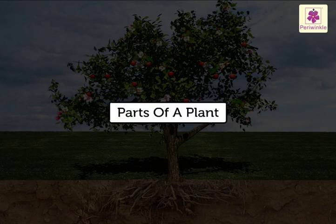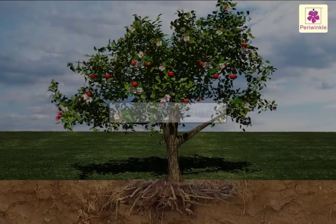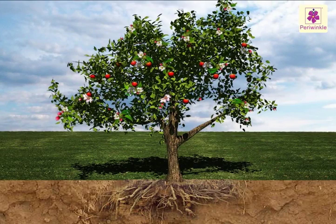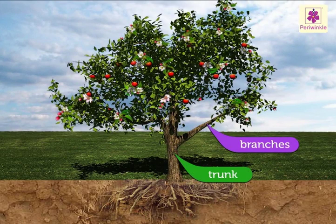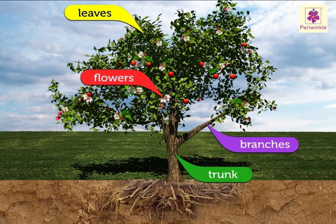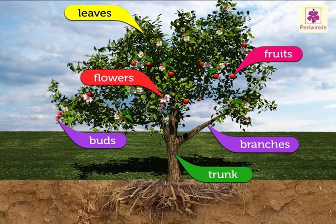Parts of a Plant. The trunk, branches, leaves, flowers, buds and fruits are the parts of plants that we can see above the ground.